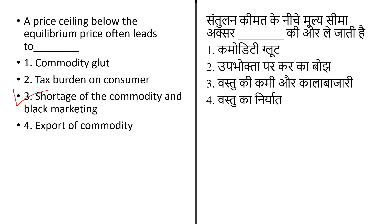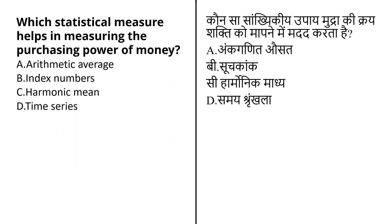This is the last question and I'm not going to tell the answer — you have to answer it. The question is: which statistical measure helps in measuring the purchasing power of money? The options given are: arithmetic average, index number, harmonic mean, and time series. I'm going to tell you the answer in my next class. Till then I'm waiting for your answer, so please comment your answer below.